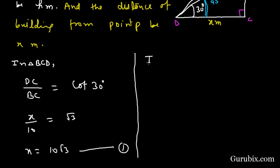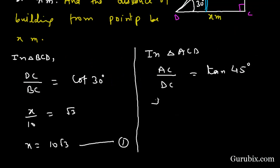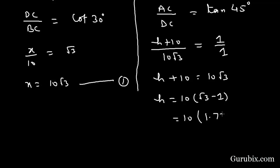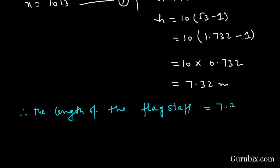Now in triangle ACD, AC over DC equals tan 45 degrees. AC is h plus 10 meters and DC we have calculated as 10 root 3. Since tan 45 equals 1, h plus 10 equals 10 root 3, therefore h equals 10 root 3 minus 10, which equals 10 times 0.732. So this equals 7.32 meters. Therefore the length of the flag staff equals 7.32 meters.